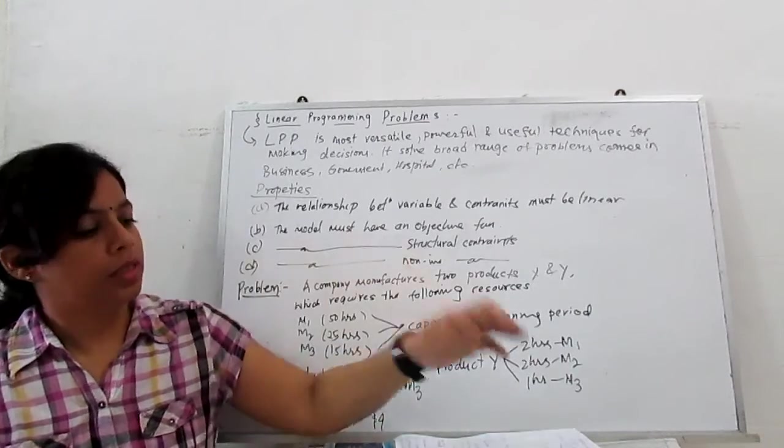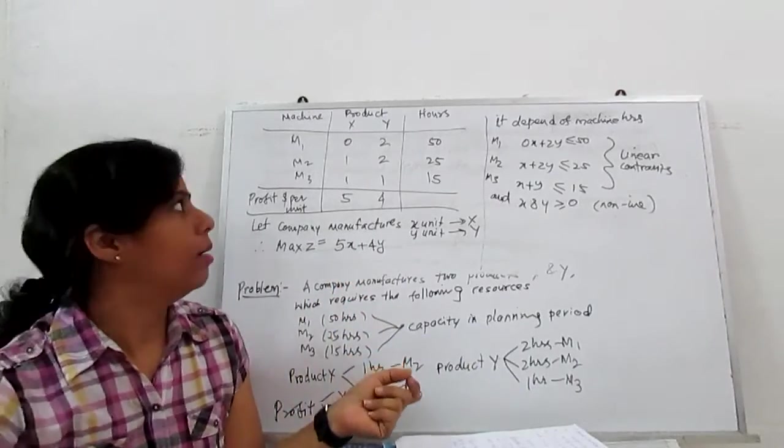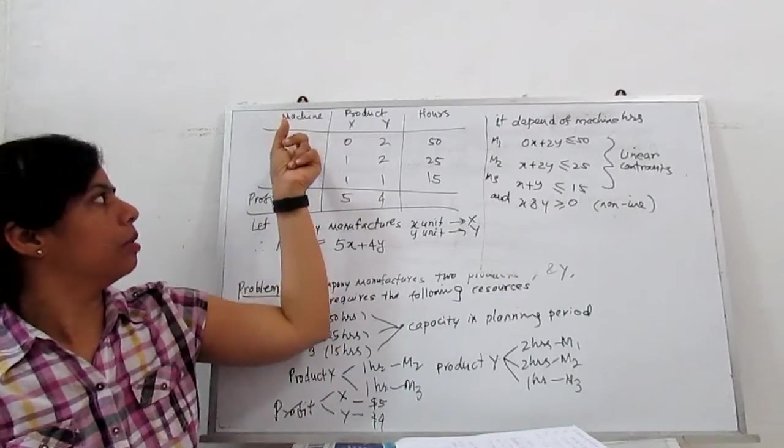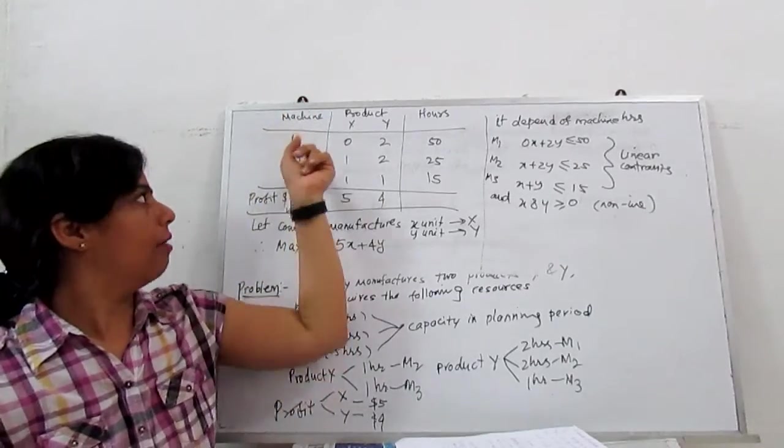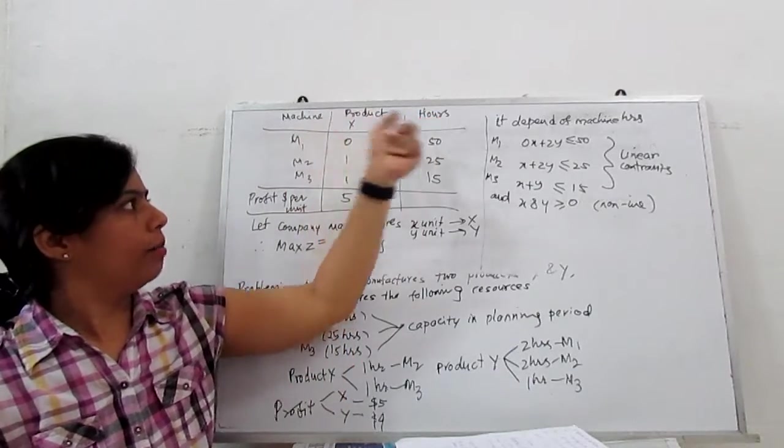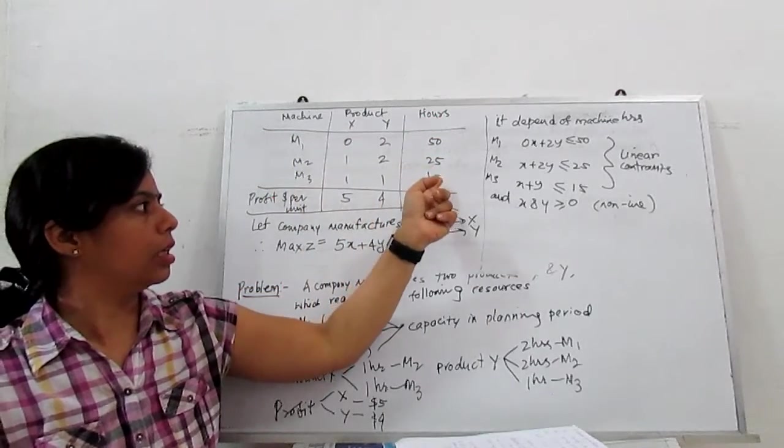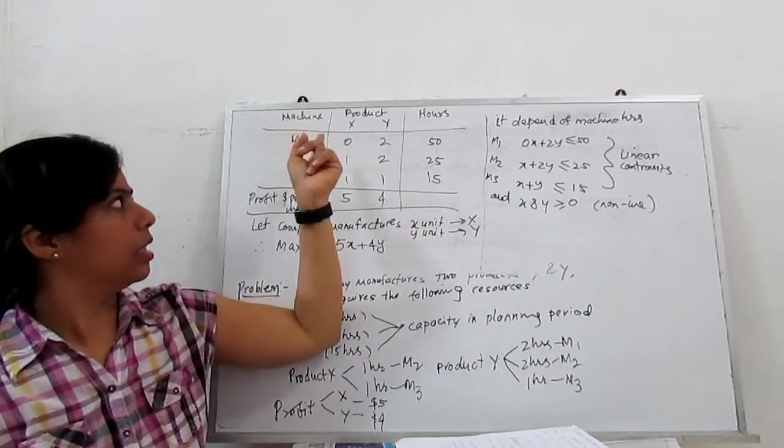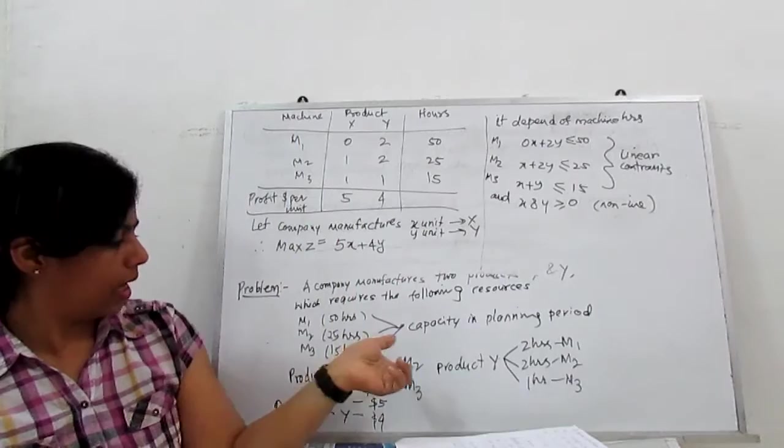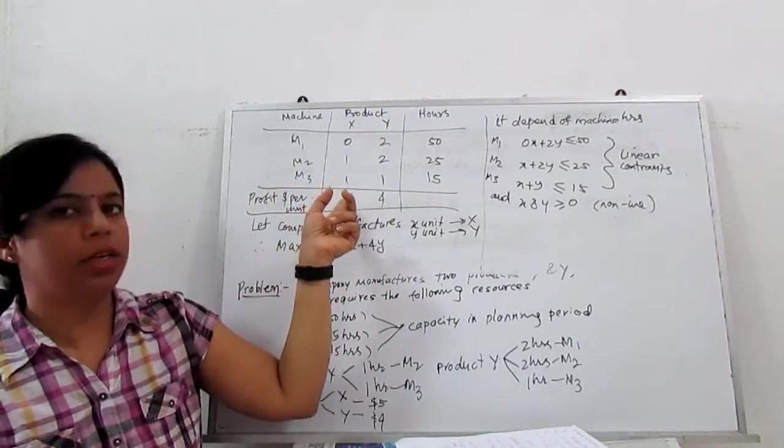So let's proceed to construct this problem. We have all the data. For LPP, we tabulate all the information. We have three machines M1, M2, M3. We make two products and the available hours are: machine one is 50, machine two is 25, machine three is 15. Product X needs zero hours on M1, one hour in M2, one hour in M3. Product Y needs the corresponding hours and profit per unit is $5 for X, $4 for Y.